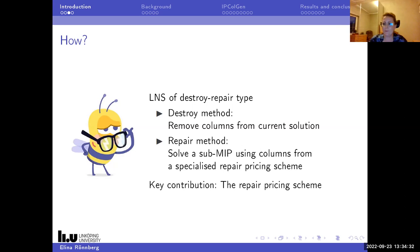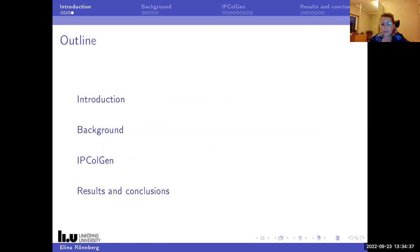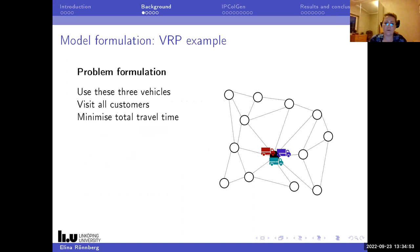The key here is the repair pricing scheme - how do you find columns that are meaningful to use in your subMIP to find an improved solution. The outline of my talk is to give some background so you understand the context, then an overview of the heuristic we designed, then some computational results. Throughout this talk I will use a VRP example to give intuition of what's going on.